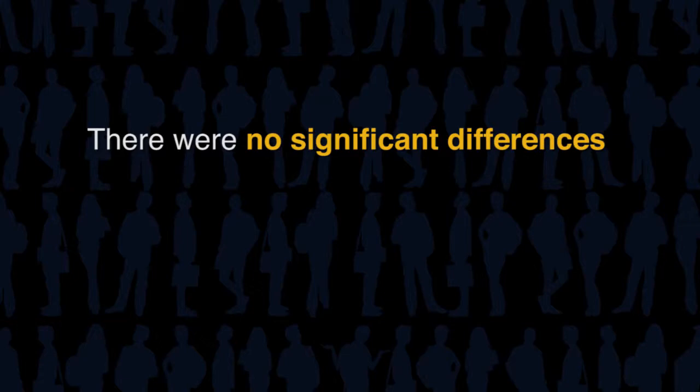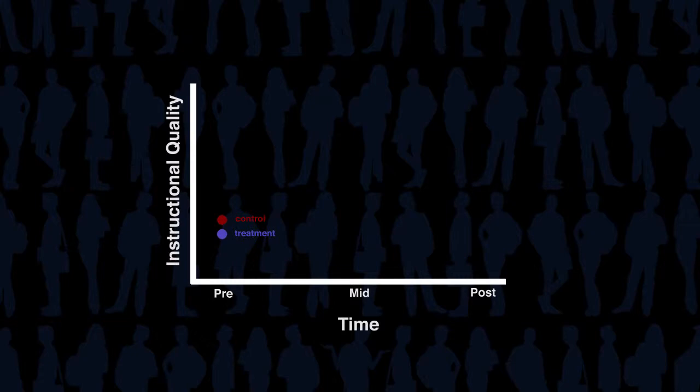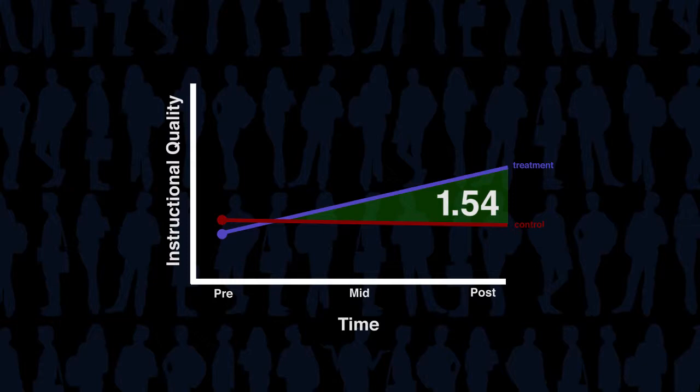There were no significant differences between the treatment and the control groups at pretest. An analysis of variance on the other data collections showed that there was a main effect for treatment that was significant, and that there were significant differences among the main effect at measurement occasion.